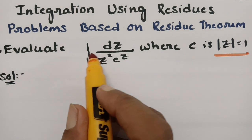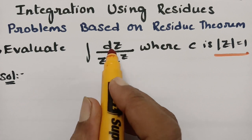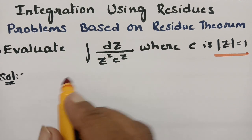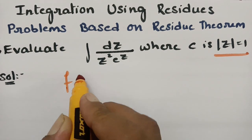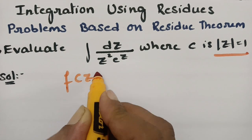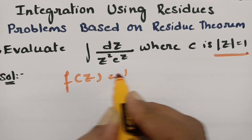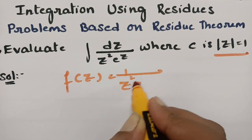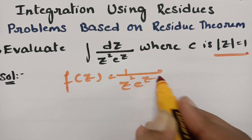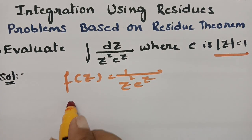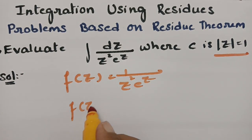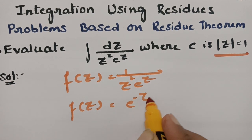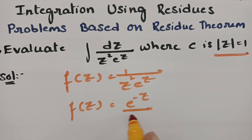Clearly, the integral of f(z) dz is given. We take f(z) = 1 divided by z-squared times e to the z, which we can rewrite as f(z) = e to the power of minus z, divided by z-squared.